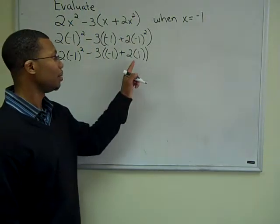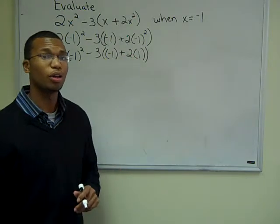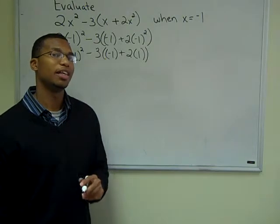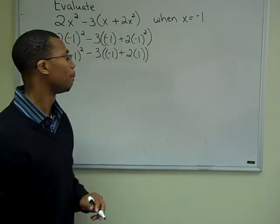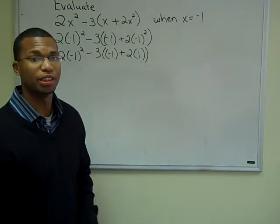Okay, in the next step, I replace the negative 1 squared with positive 1. Of course, I replace it with positive 1 because negative 1 times negative 1 is positive 1. Now we're going to perform the multiplication inside of the parentheses.